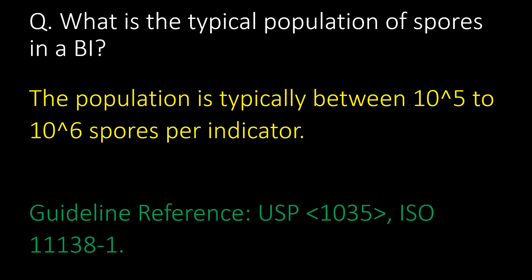What is the typical population of spores in biological indicators? The population is typically between 10^5 or 10^6 spores per indicator. Reference guidelines: USP chapter 1035 and ISO 11138-1.